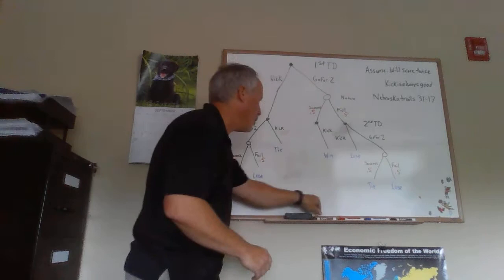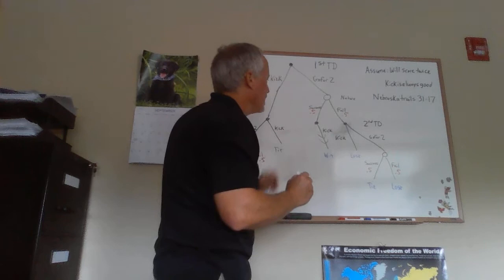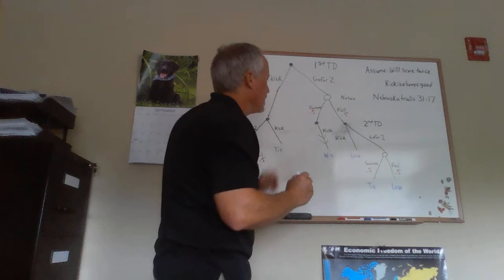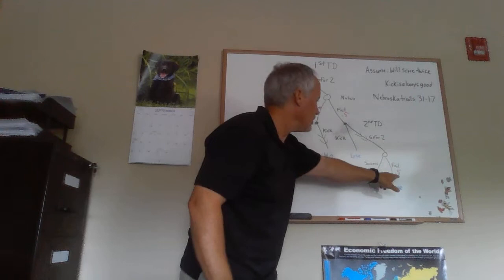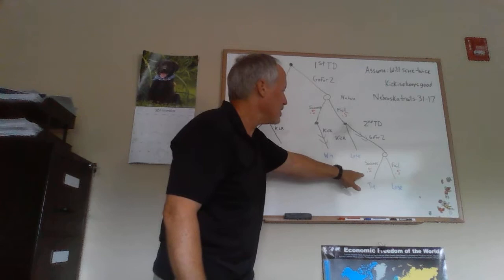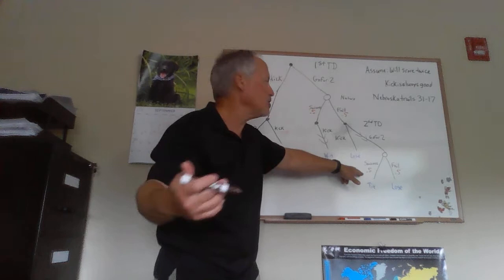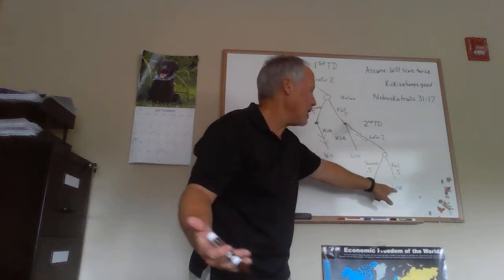But what if you fail on that first two-point attempt? That makes it 31–23. You score the second touchdown. You could kick and make it for sure, but that ends the score at 31–30 and you lose — so kicking is dominated. What you're going to do is go for two after failing the first attempt. You've got the coin flip again: if you're successful, you were down 31–30, eight points gets you to 31–31, that's a tie. If you fail again, that's 31–29 and you lose.